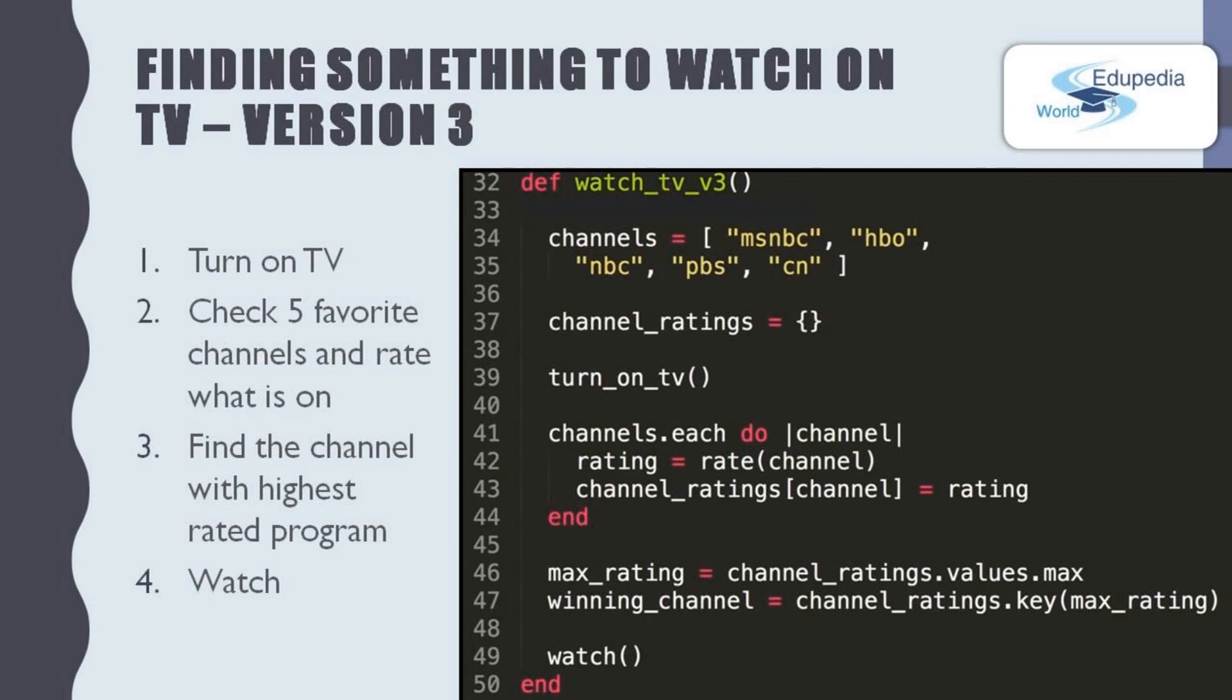Here is another solution. And this time we are not going through all of the TV channels. We are considering the top 5 TV channels that we most like. So the first step is turn on the TV. The second step is check 5 favorite channels and rate what is on. The third step is find the channel with the highest rated program. The fourth step is watching that TV channel. If we write it down in a procedure,